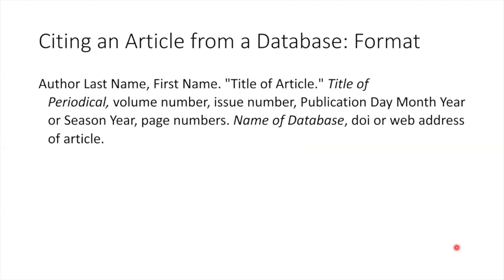Citing an article from a library database is a bit more involved, but the process is the same. Once you know the elements that make up a citation, you can find them in your source and plug them into the template. Like a book citation, article citations start with the author's last name, comma, first name, followed by a period. Next, you'll have the title of the article with all the important words capitalized, followed by a period, and the whole thing is enclosed in quotation marks. Next comes the title of the periodical or publication in italics, followed by a comma, then the volume number, issue number, publication date, and page numbers, followed by a period. If you don't have a page number, you leave it out. Next comes the name of the database where you found the article — in italics — a comma, and the DOI or web address of the article. We'll discuss DOIs a bit more in a few minutes.